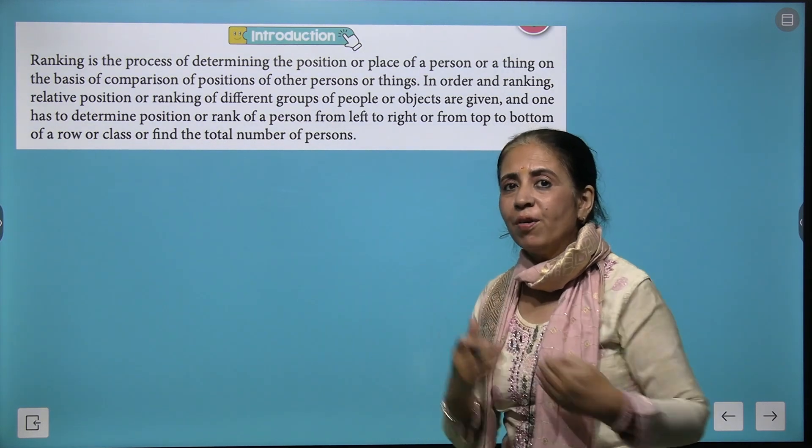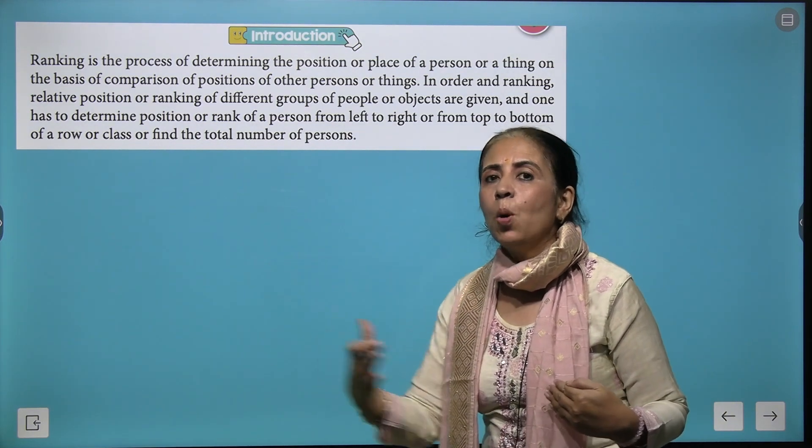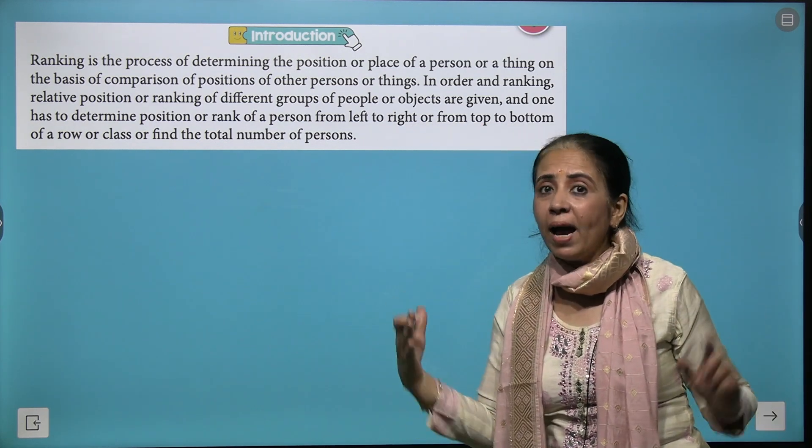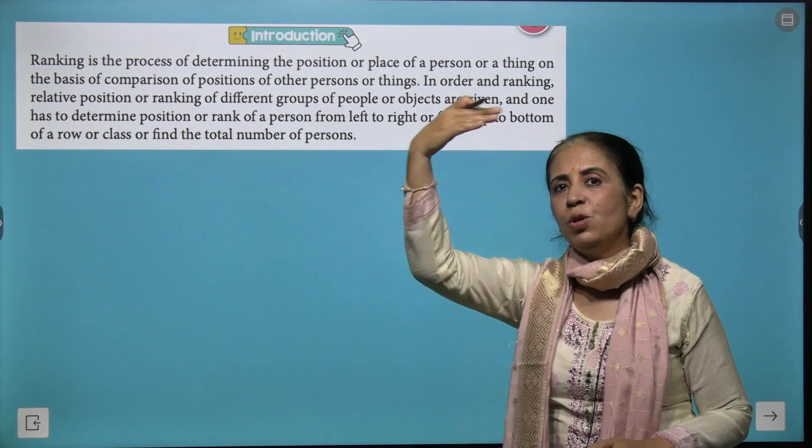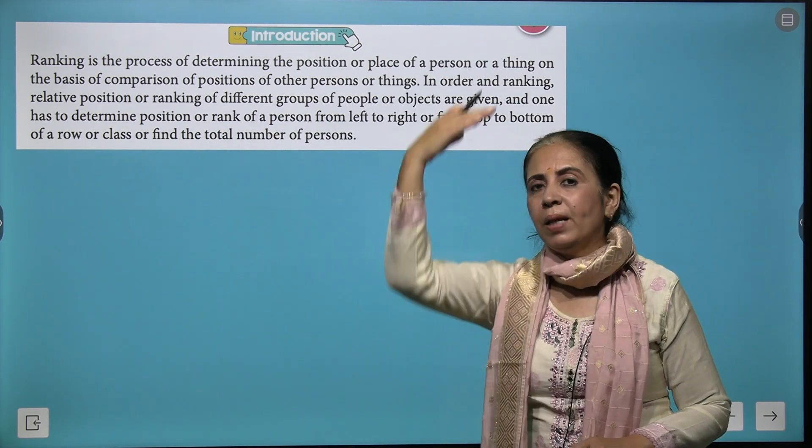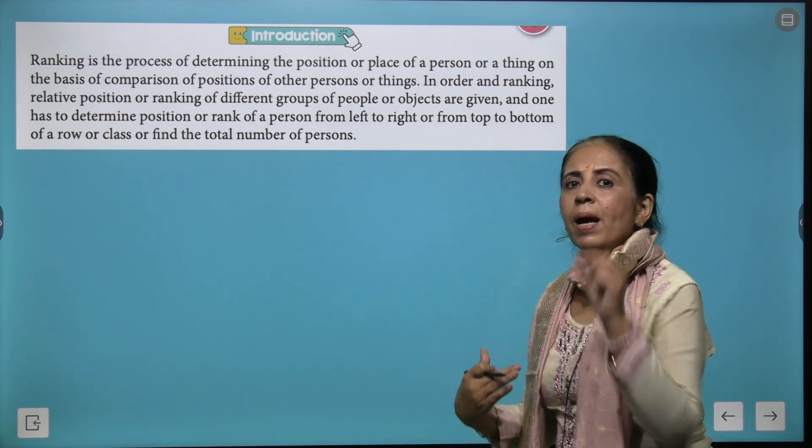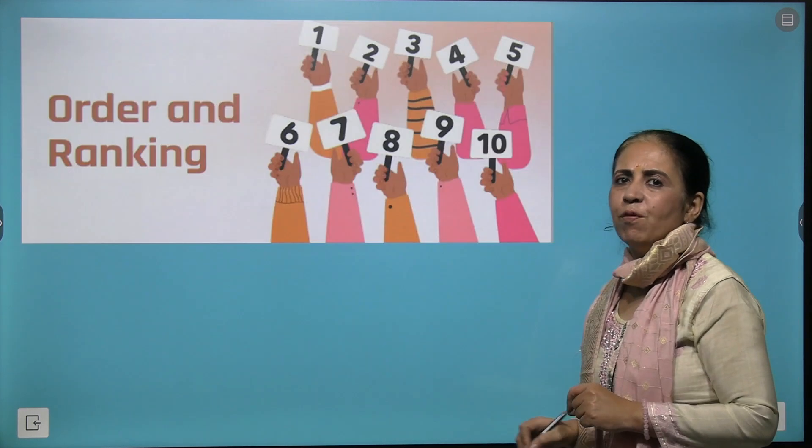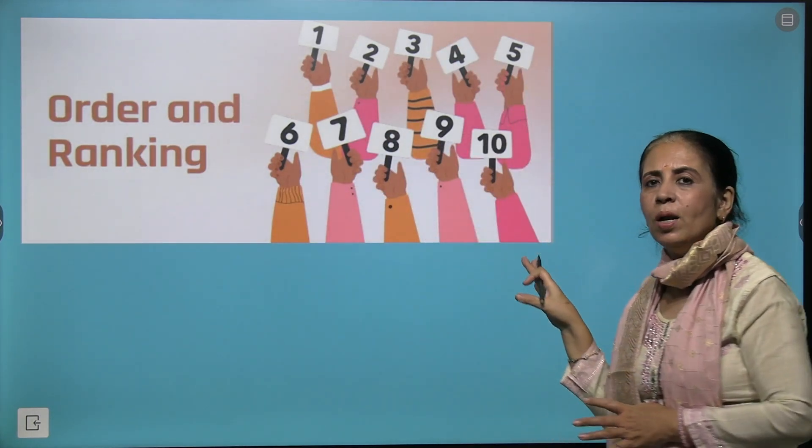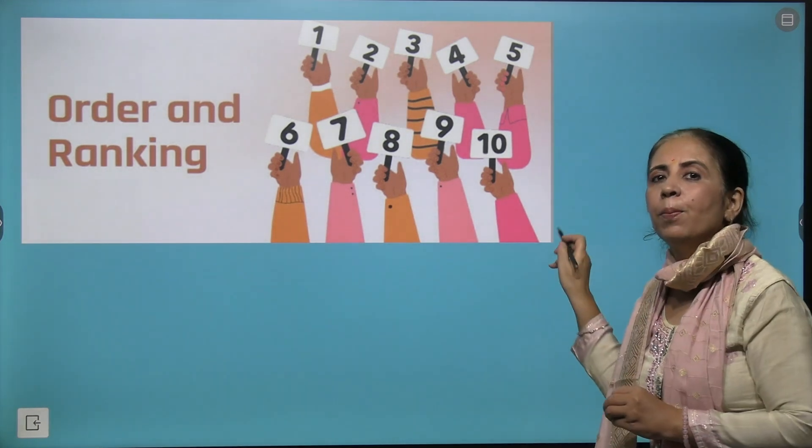So we say that ranking is a process of arranging something in order. It could be from left to right, it could be from right to left, and sometimes we do the arrangement in a vertical way, that is from top to bottom. We have a few example problems that will make the concept more clear.